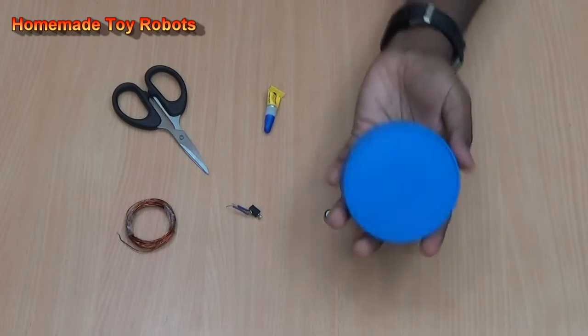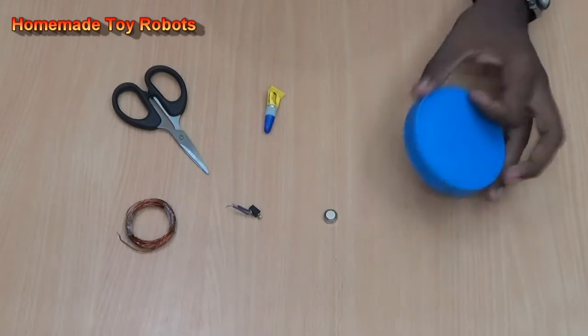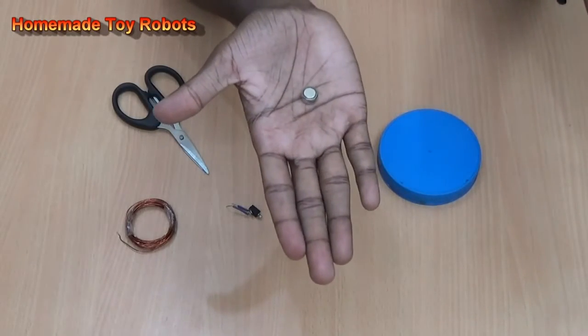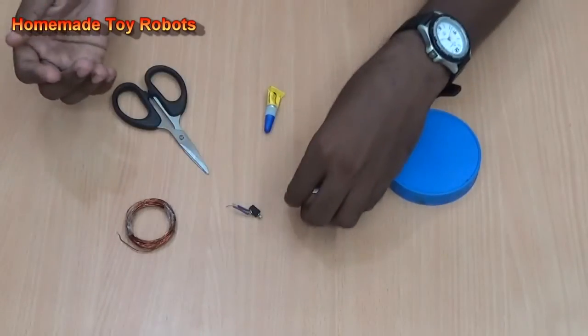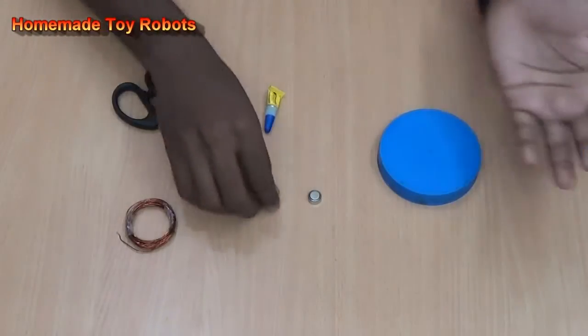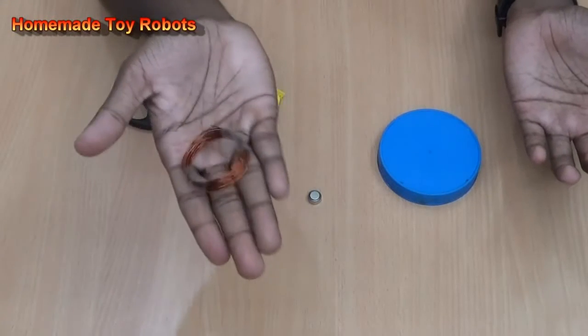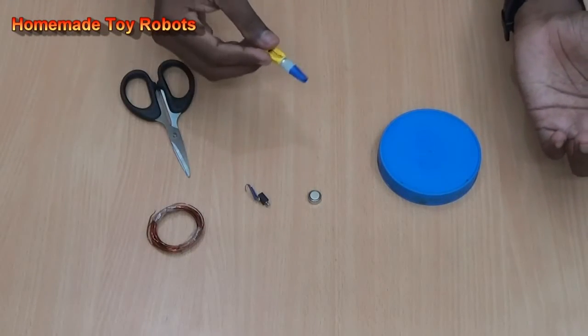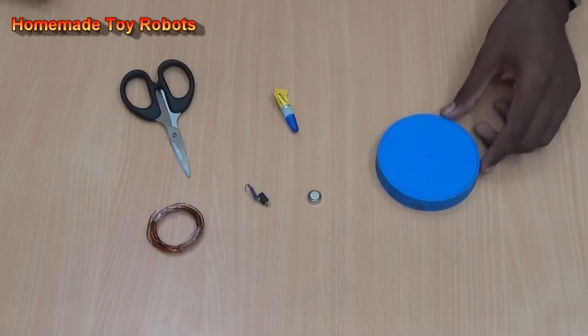The requirements are a plastic cap, 1.5 volt small motor battery, a mobile vibrator motor, copper wire, scissor and a glue gun. That's it, let's start.